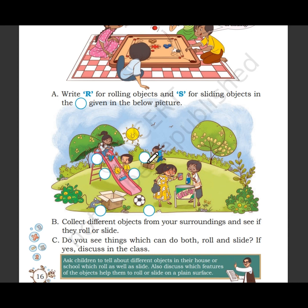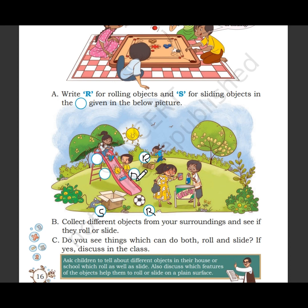This shape is round, so what will it do? Roll. Ball is round, so what will it do? Roll. Now, the surface is flat, so what will happen? Slide. This is a water bottle — what will happen? Roll or slide? This one is round, so — Roll. This is flat, so what will happen? Slide.